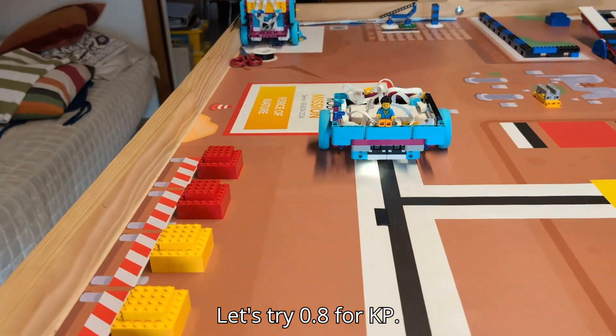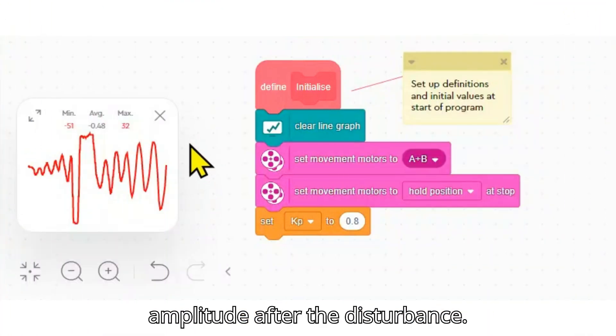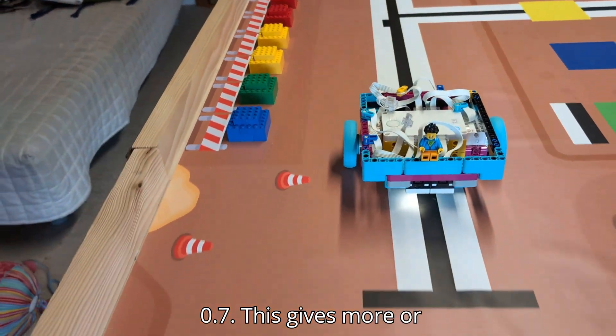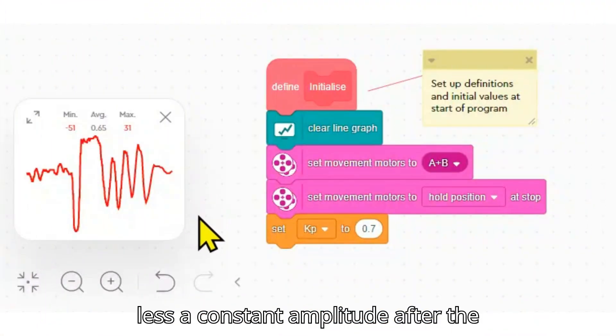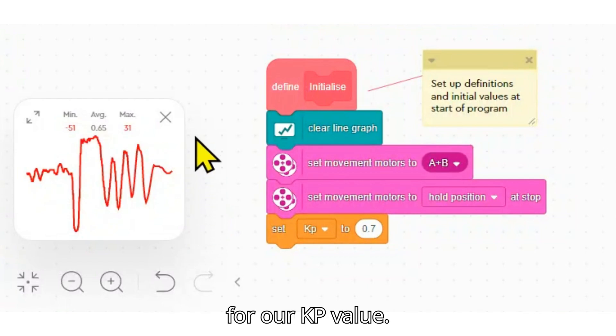Let's try 0.8 for KP. This gives a slightly increasing amplitude after the disturbance. Let's try a value of 0.7. This gives more or less a constant amplitude after the disturbance so we will take half of this for our KP value.